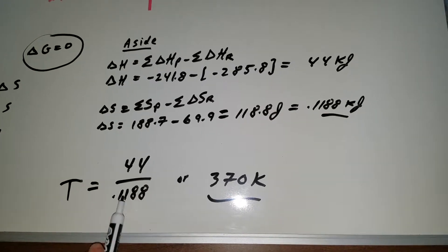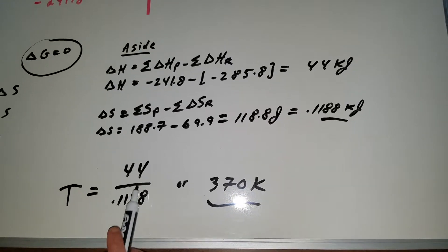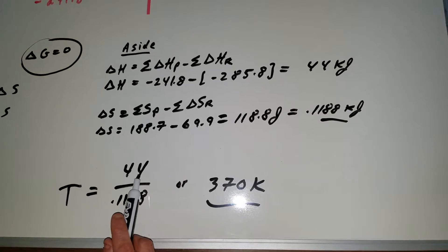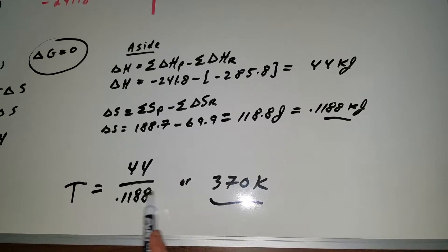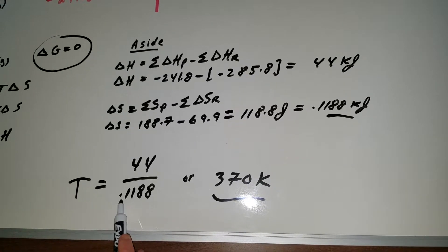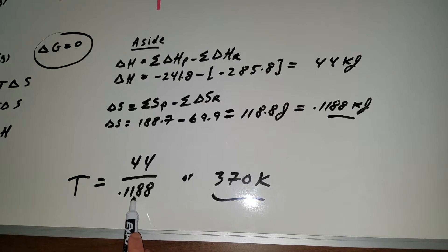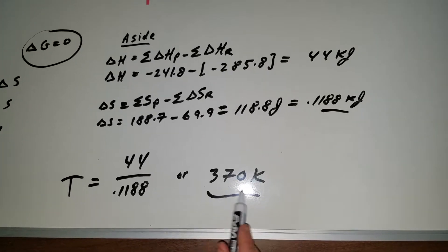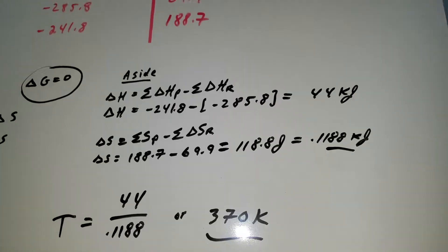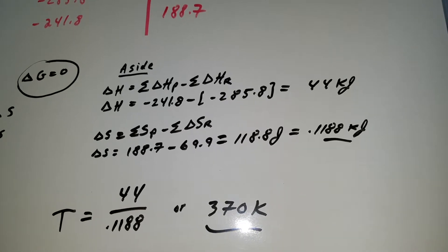we're under 440 because this is 0.1188. So it's under 400 and a good estimation would be about 370 or 380. It came out to be 370 with a calculator.